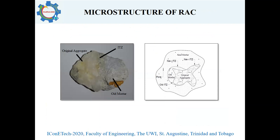Microstructure of the recycled aggregate concrete. The image on the left shows an image of the recycled concrete aggregate. It consists of the original aggregate, the ITZ — the interfacial transition zone — which is the weakest link within the matrix, and the old attached mortar, which consists mainly of fine aggregates, hydrated and unhydrated cement particles. The old attached mortar is very porous with cracks and pores on its surface, which has higher water absorption and lower density as compared to a natural aggregate.